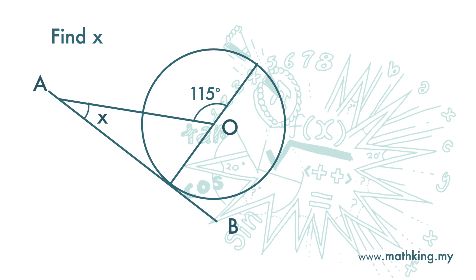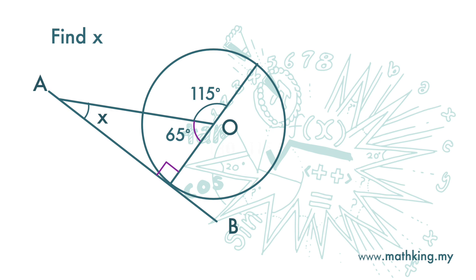Line AB is a tangent to this circle with center O. Find X. Since this is a tangent, the angle at the center O is 90 degrees. Let's look at this triangle. If we can find out this angle at the center here, we can find out angle X. The angle at the center here is 180 minus 115 degrees, which is 65 degrees. The sum of interior angles of a triangle is 180 degrees. So X is 180 minus 90 minus 65, which is 25 degrees.